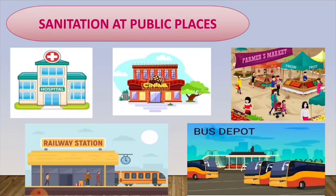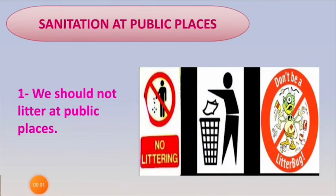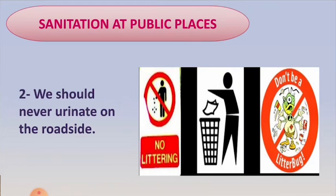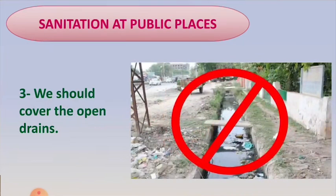Dear students, we can also contribute to maintaining sanitation at public places by observing the following practices: we should not litter at public places; if there is no dustbin available, the waste should be carried home and thrown in the dustbin. Second, we should never urinate on the roadside. Third, we should cover open drains. If the sewage of any particular house makes our neighborhood dirty, we should inform the sanitation department of the municipality.